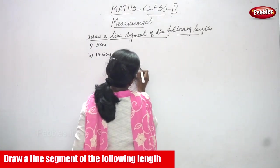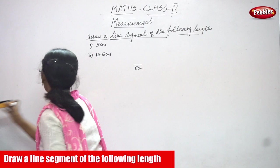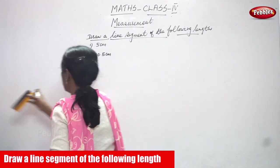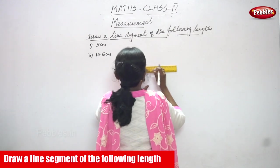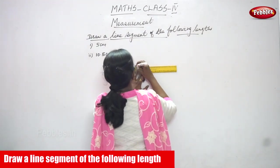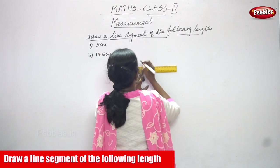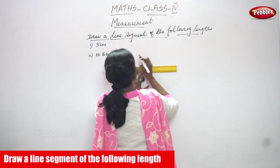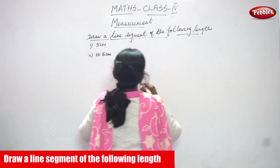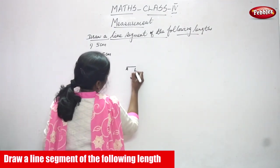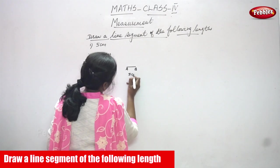This is 5 cm. I will repeat once again. You take a scale and 0 to 5. This is A and this is B. It is called as 5 cm.